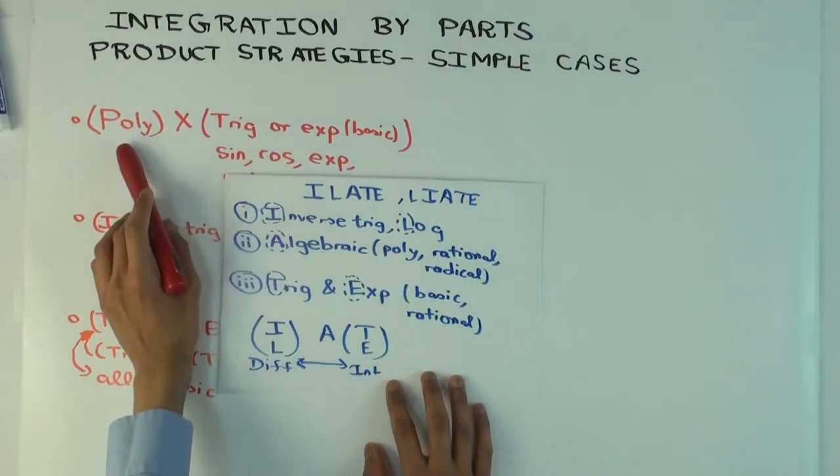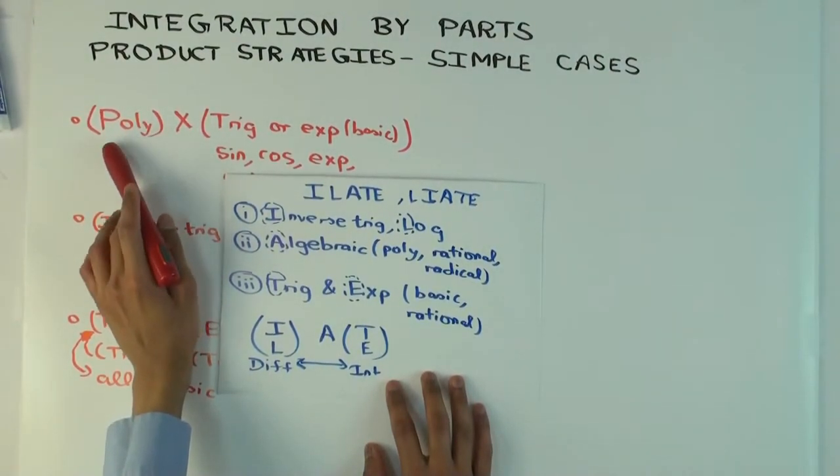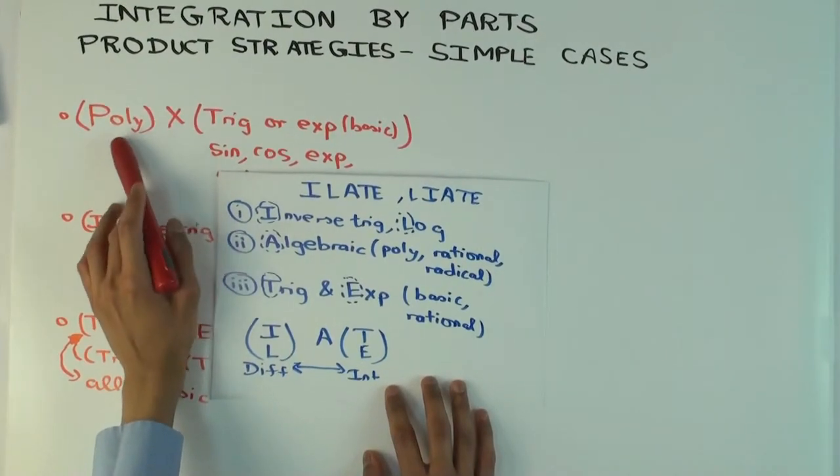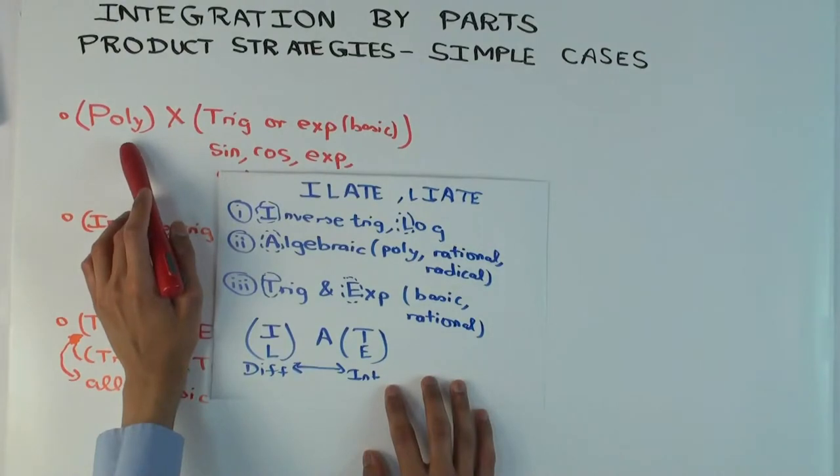What happens to the polynomial when you differentiate it? The degree goes down by one. It remains a polynomial, but the degree goes down by one. And if you differentiate a polynomial enough times, what happens? It goes to zero. It becomes zero.